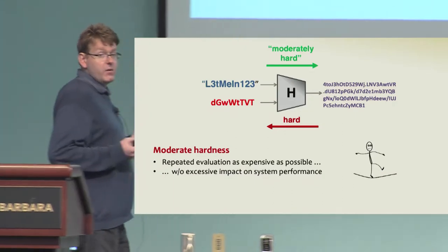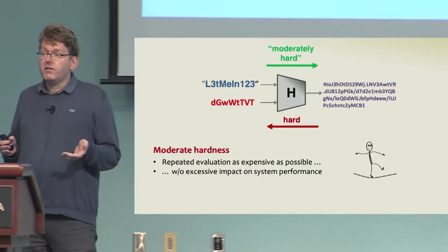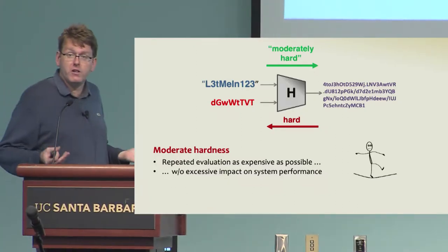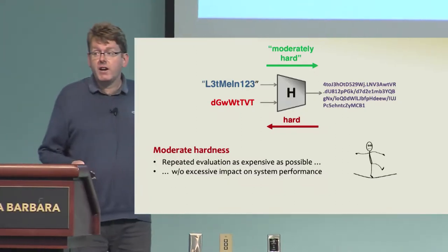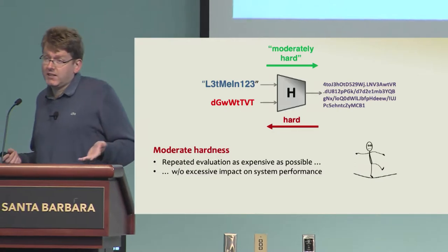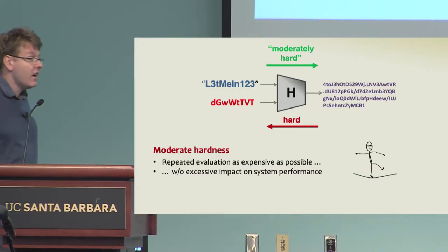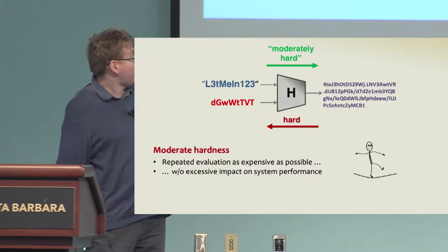Moderate hardness means that on the one hand, the function should be sufficiently expensive to compute, for example, to slow down brute force password cracking attacks. But on the other hand, it should not be excessively expensive to affect the performance of a system using it. Hence the balancing act.